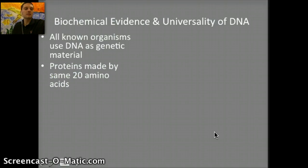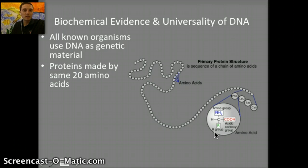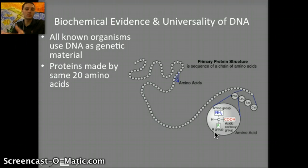Secondly, proteins are made up of the same 20 amino acids. We've previously talked about how proteins are made and how amino acids are connected by peptide bonds. The only difference between proteins is the arrangement and the amount of amino acids put together to make that protein. This suggests that all organisms have some similarities because all proteins are composed of the same types of amino acids, just in different numbers or arrangements.